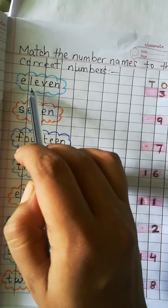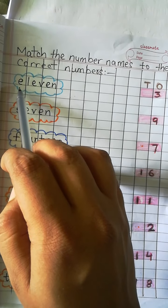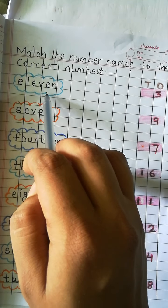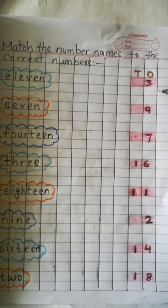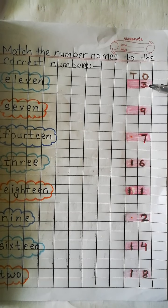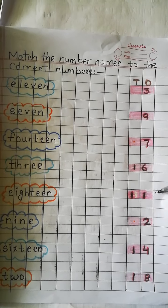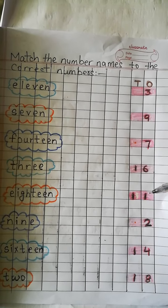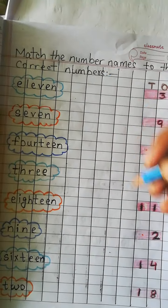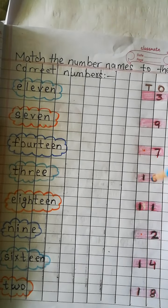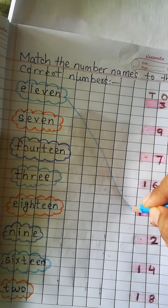The first number name is ELEVEN — E-L-E-V-E-N. Let's find number 11. Here is number 3, 9, 7, 16, and here is number 11. So we need to match — here is ELEVEN, and here is number 11. So we will match.